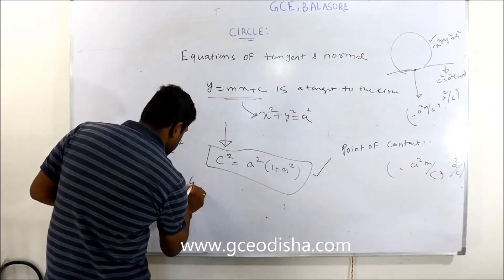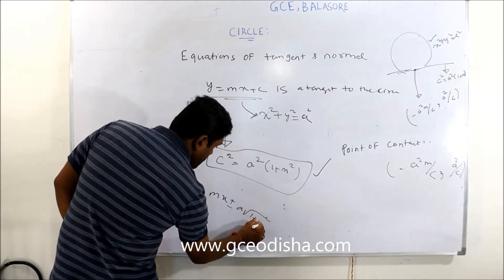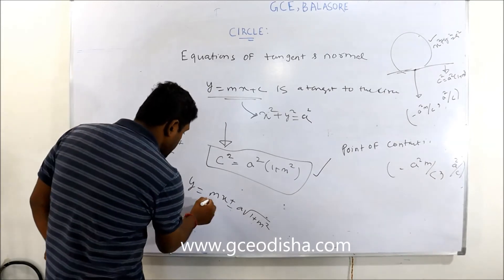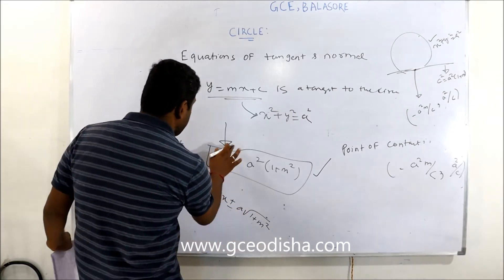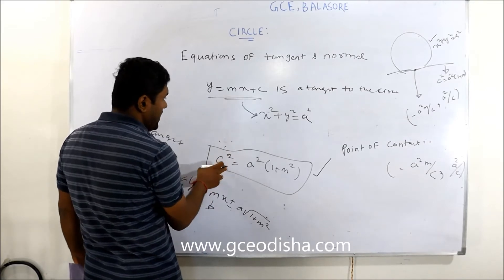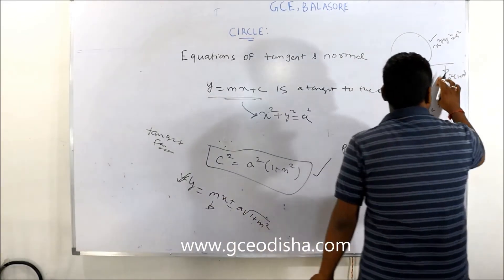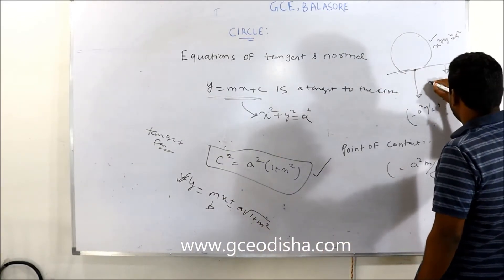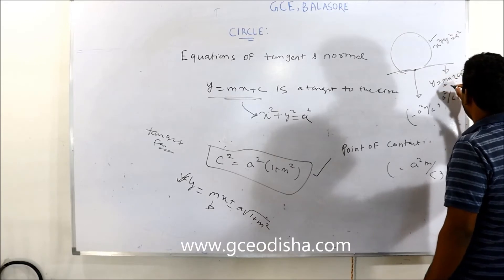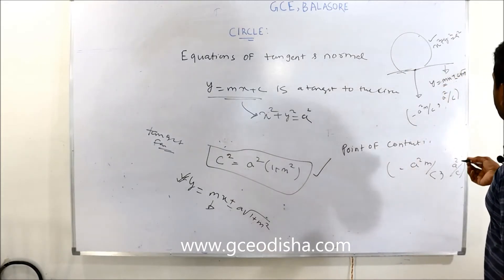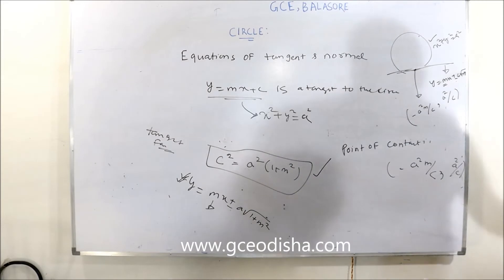The general equation of the tangent to the circle x² + y² = a² is y = mx ± a√(1 + m²). For whatever value of m you choose, this gives the equation of the tangent. This is the general tangent equation.